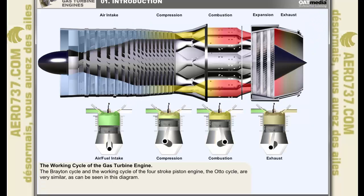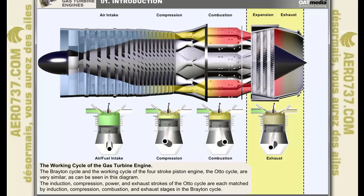The working cycle of the gas turbine engine is called the Brayton cycle, after George Brayton, an American mechanical engineer who invented the continuous ignition engine, which was the basis of the gas turbine engine. The Brayton cycle and the working cycle of the four-stroke piston engine, the Otto cycle, are very similar, as can be seen in this diagram. The induction, compression, power and exhaust strokes of the Otto cycle are each matched by induction, compression, combustion and exhaust stages in the Brayton cycle.